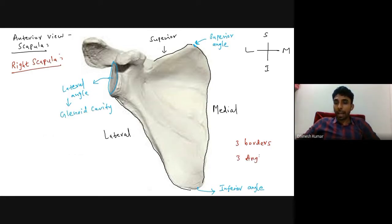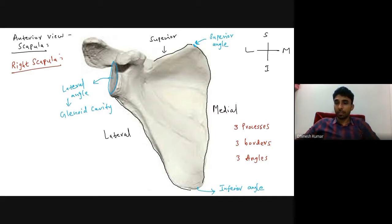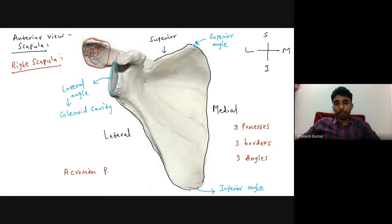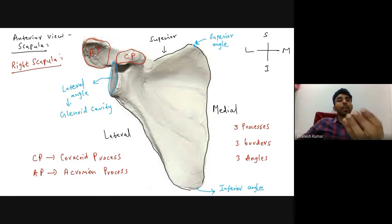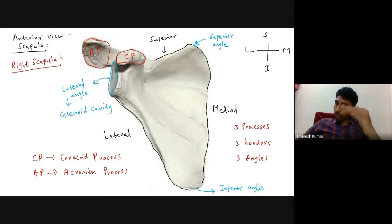Now let's talk about the three processes of the scapula — processes meaning projections. The first is the acromion process of the scapula, abbreviated AP. The second is the coracoid process of the scapula, abbreviated CP. As you can clearly see from this diagram, the coracoid process of the scapula projects forwards — anteriorly.